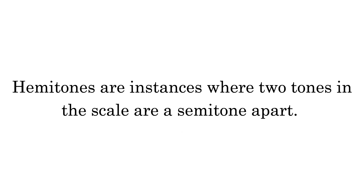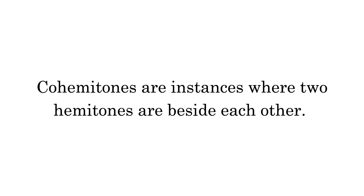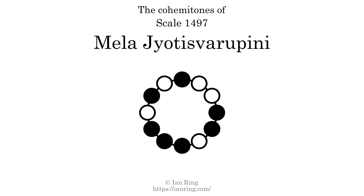Hemitonics are instances where 2 tones in the scale are a semitone apart. This scale has 3 hemitonics, at positions here, here, and here. Co-hemitonics are instances where 2 hemitonics are beside each other. This scale has 1 co-hemitonic.